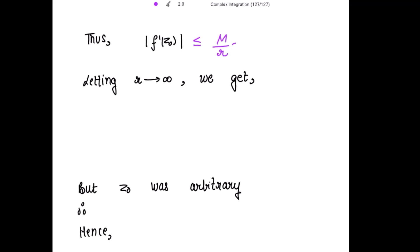Now because this function is an entire function, that means it is analytic on the whole complex plane, so I can take my radius to be as large as I can take. So letting it attain to infinity over here, we get mod of f'(z_0) is less than or equal to 0, because f(z) is an entire function.